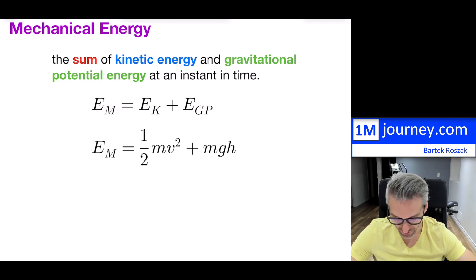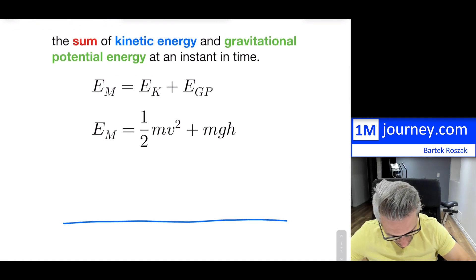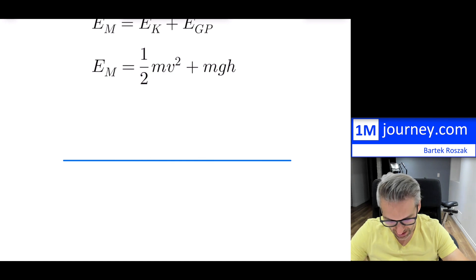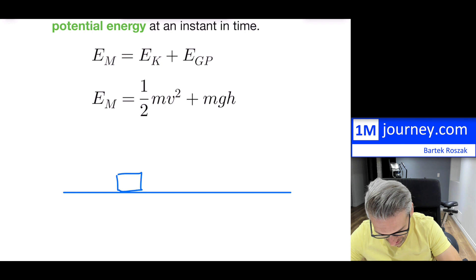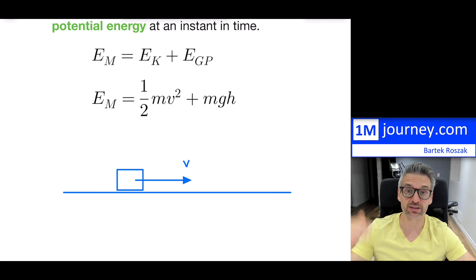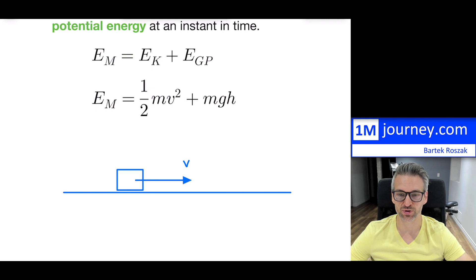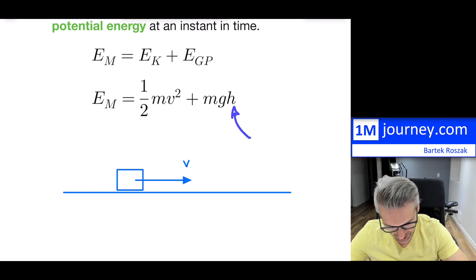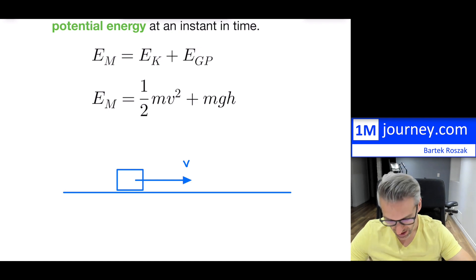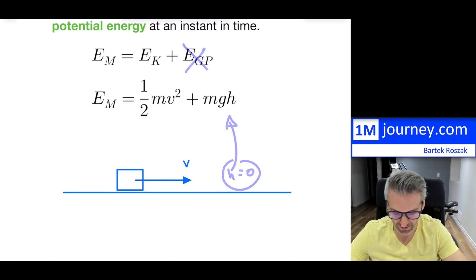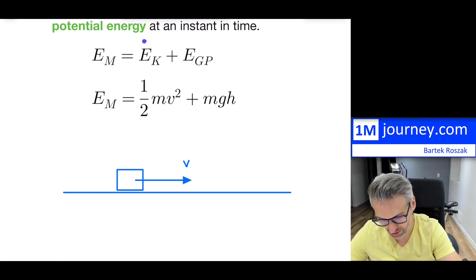There are a few things you should keep in mind. For example, if you have a surface and an object is placed on the surface and it is moving — so it's going to have some kind of velocity or speed — but it is directly on the surface, then the gravitational potential energy has h = 0, which means you're not going to have any gravitational potential energy. Therefore your mechanical energy is going to be solely kinetic energy.